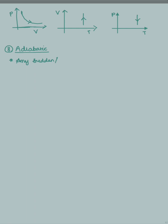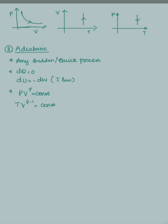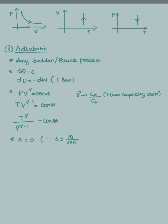The adiabatic process is any sudden or quick process — like the bursting of a tyre — and it is an adiabatic process. Here, change in heat is zero, so the first law of thermodynamics becomes ΔU equals minus ΔW. The corresponding gas laws are PV^γ = constant, TV^(γ-1) = constant, and T^γ / P^(γ-1) = constant. Here, gamma is Cp by Cv. In this process, specific heat capacity will be zero, since S = Q/(m ΔT) and Q is zero.